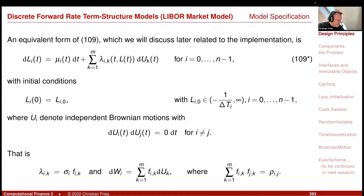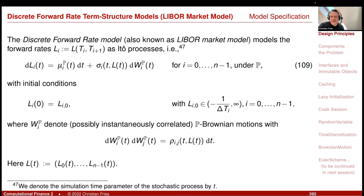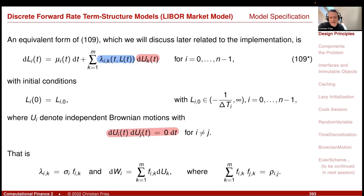We are in the section of interest rate models, the discrete forward rate term structure model, and I would like to start discussing the implementation. Our model setup features factor loadings in front of independent Brownian increments, in contrast to the version that has a volatility parameter in front of correlated Brownian motions. We know how to translate between these versions and how the drift is calculated once we have chosen the numeraire.